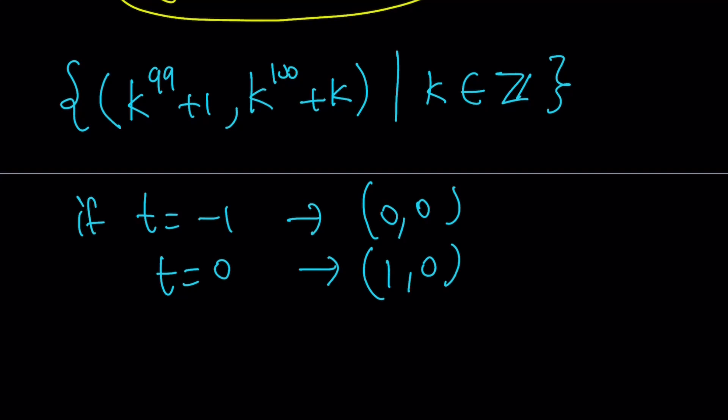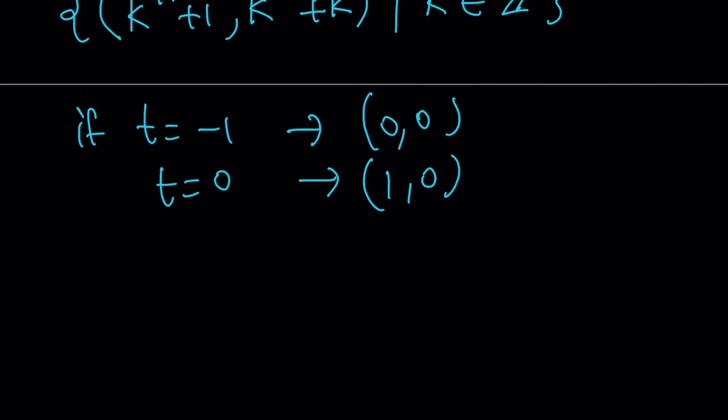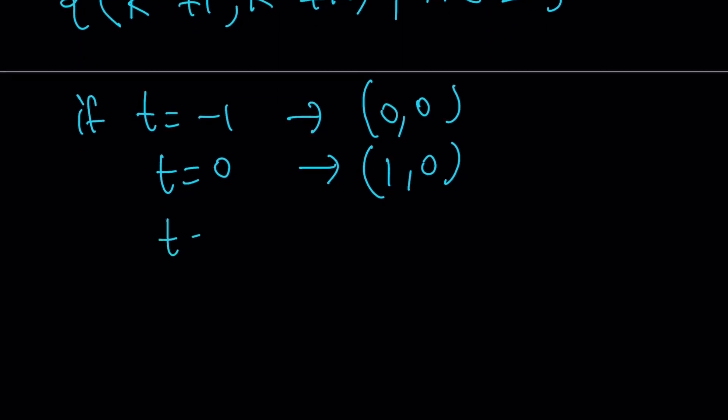That's kind of interesting. If you replace y with 0 in the original equation, you're going to notice that those are the two solutions you're getting. But we're finding all the solutions. And if t is equal to 1, then we're going to get (2,2), which is kind of interesting, but you can always verify.